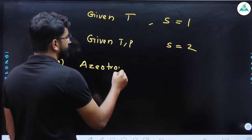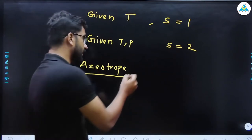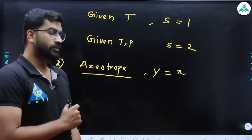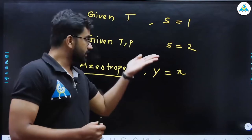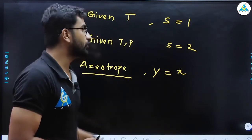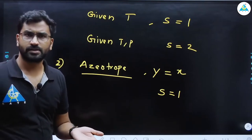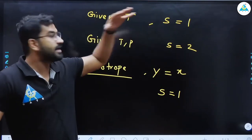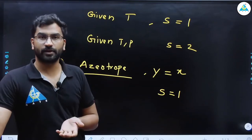The second type of special constraint is azeotrope formation. An azeotrope means the vapor and liquid mole fractions are equal: y = x. This means the composition is already fixed — you cannot freely choose the mole fraction. So when an azeotrope is formed, S = 1. If there is no azeotrope formation, S = 0.